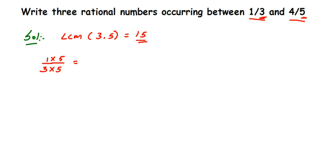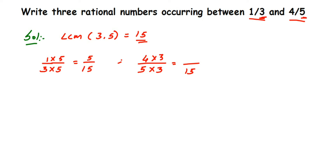Remember, five by fifteen is equivalent to one by three — they are equal. For the second number, four by five, we do the same thing. We multiply both numerator and denominator by three, because five times three is fifteen. So four multiplied by three gives twelve, and we get twelve by fifteen.